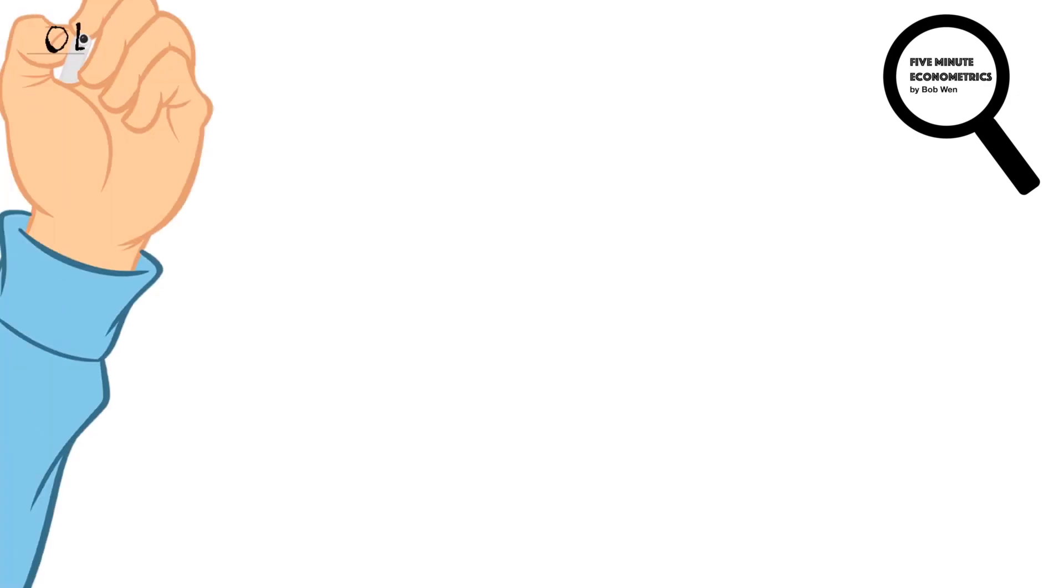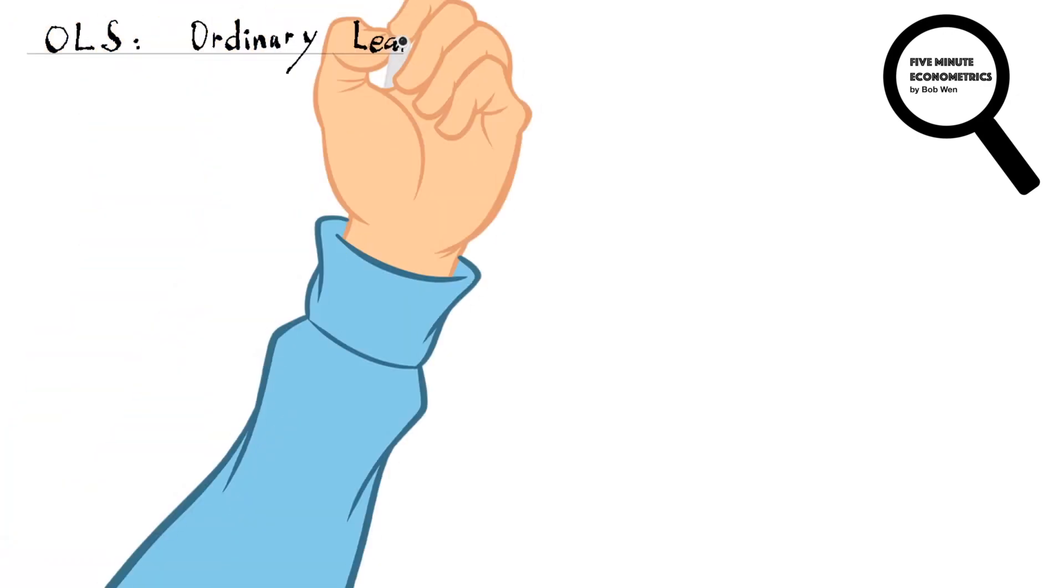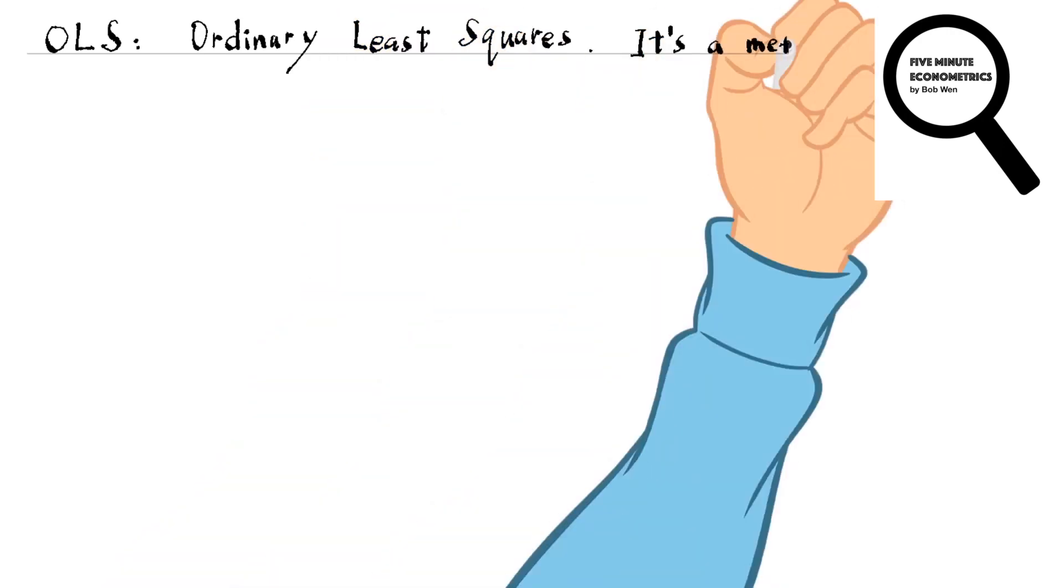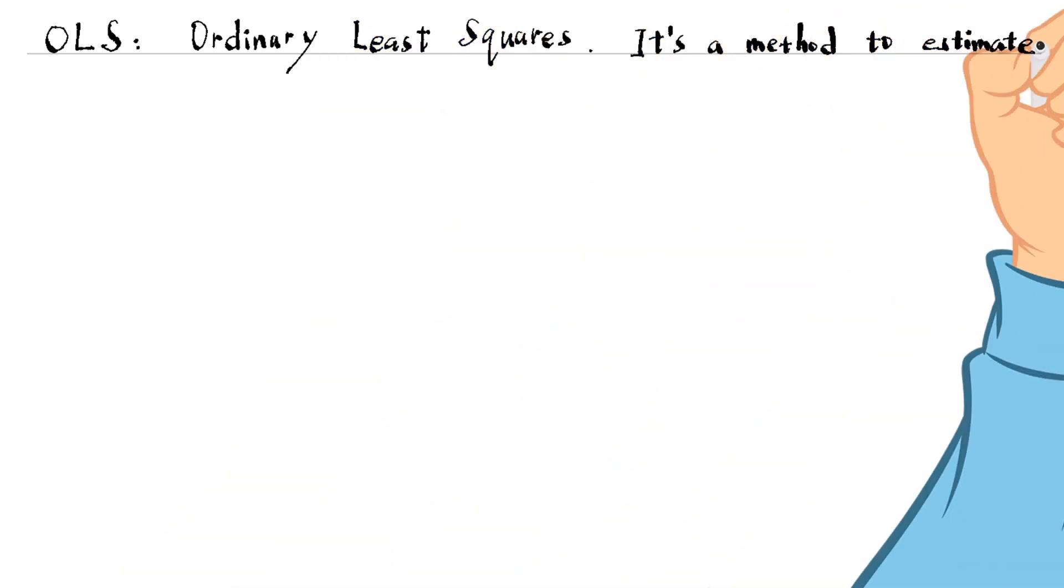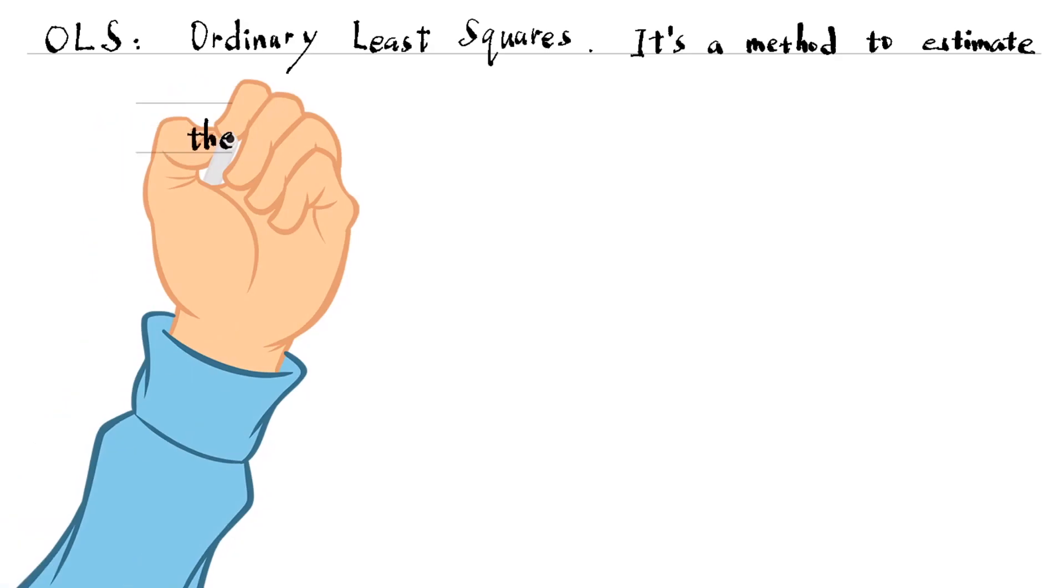OLS is the abbreviation for ordinary least squares. It is a method to estimate the relationship between two variables.